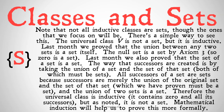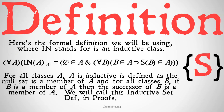Inductive classes can be any number of things that fit these rules. Here's the formal definition we're going to be using, where IN stands for 'is an inductive class.' For all A, A is inductive by definition equals: the null set is a member of A, and for all B, B is a member of A implies that the successor of B is a member of A. A is inductive if the null set is a member of A, and for all classes B, if B is a member of A, then the successor of B is a member of A. We're going to call this the inductive set definition in proofs.